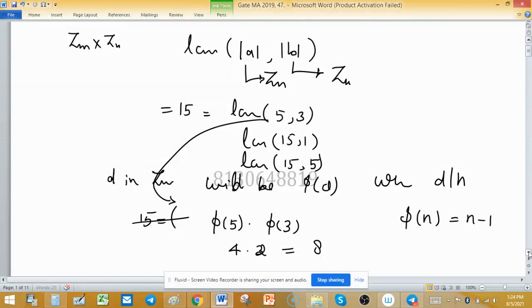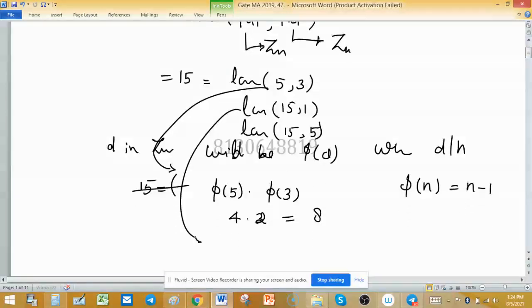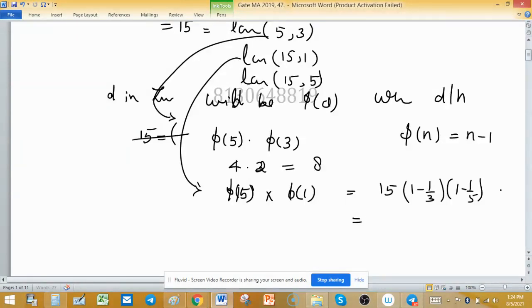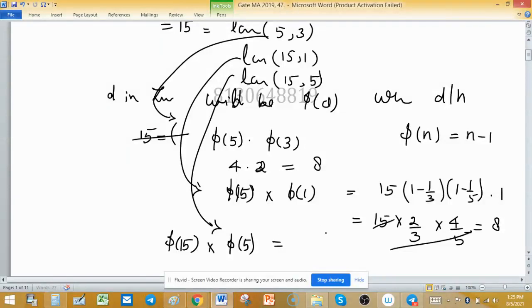Another case: we can find φ(15) × φ(1). The value of φ(15) is 15(1 - 1/3)(1 - 1/5), which equals 15 × 2/3 × 4/5. This simplifies to 8. And the value of φ(1) is 1, so 8 × 1 = 8. For the case where LCM is (15,5), we have φ(15) × φ(5), which is 8 × 4 = 32.